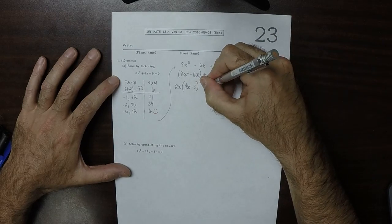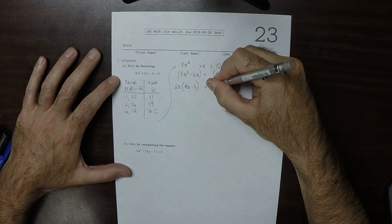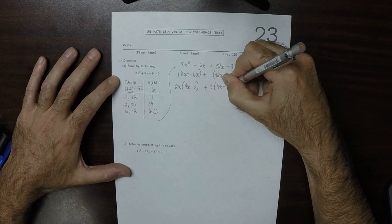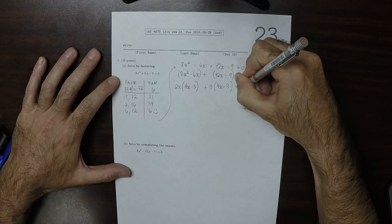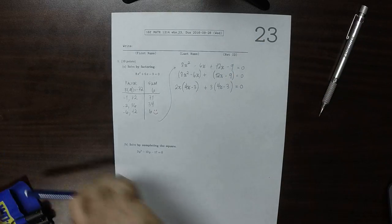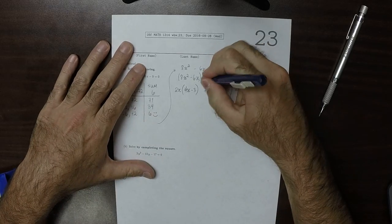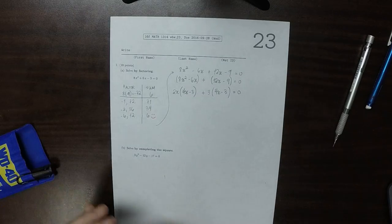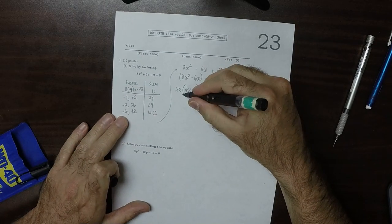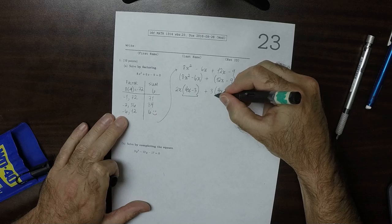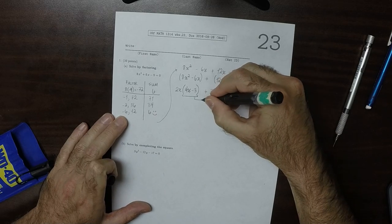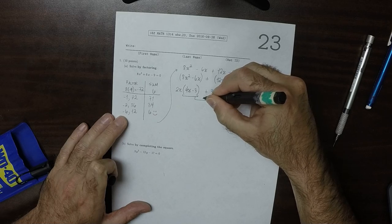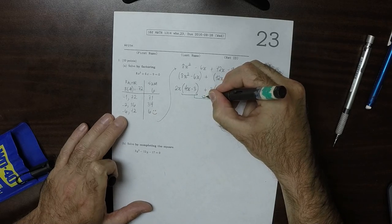4x minus 3, and then out of this group, we can factor out 3. So 4x minus 3 has occurred in both positions. We see it's occurred here and there, and that's good, we like that, because that means we probably did something right.